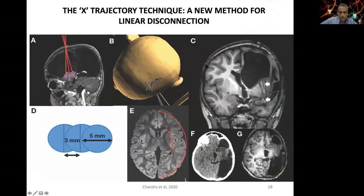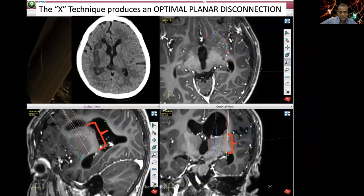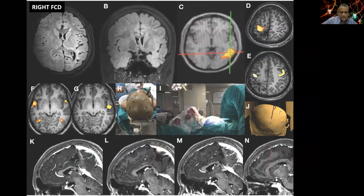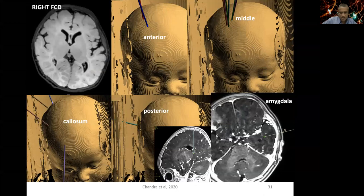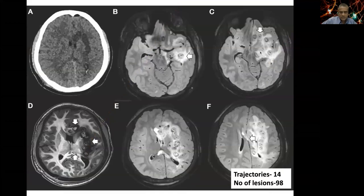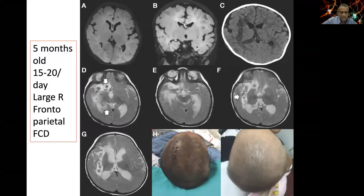Using the X technique we reduced the number of trajectories and burns while providing a nice planar disconnection as shown on MRI. The principle: we need only disconnect from the floor of the lateral ventricle to the roof of the temporal horn — trajectories here are more or less parallel, producing hemispheric disconnection. Another example: a right large frontal hemispheric cortical dysplasia where all disconnections were performed including corpus callosal — anterior, middle, corpus callosal, posterior, amygdala, and temporal stem — with 14 trajectories and 98 lesions.